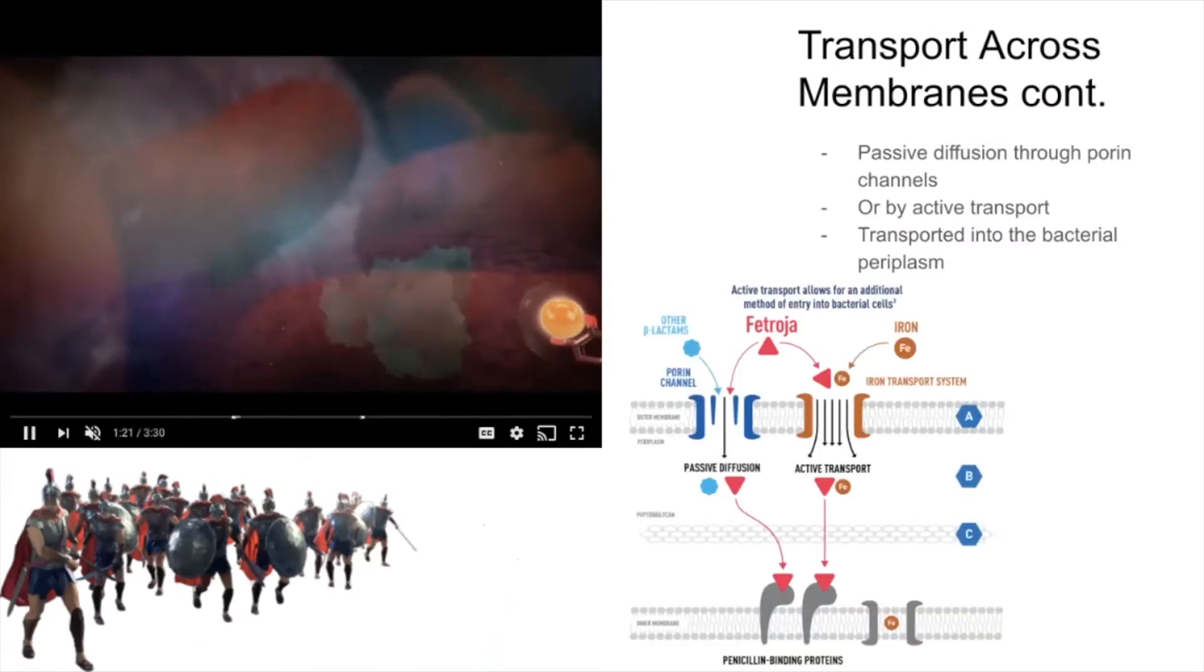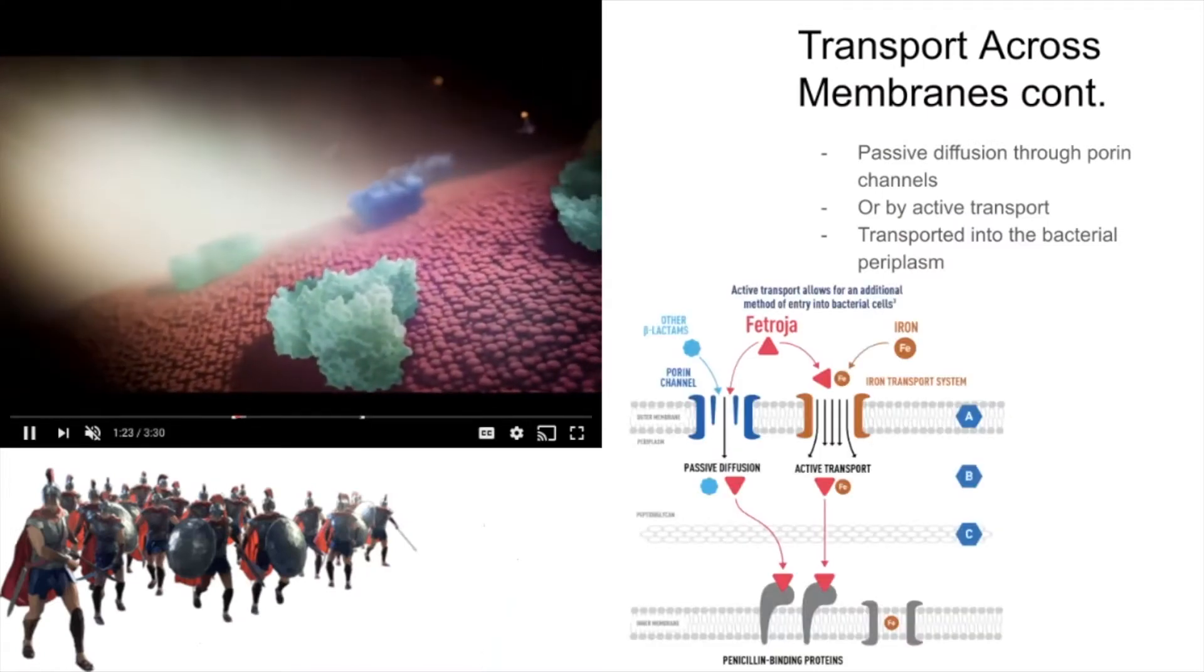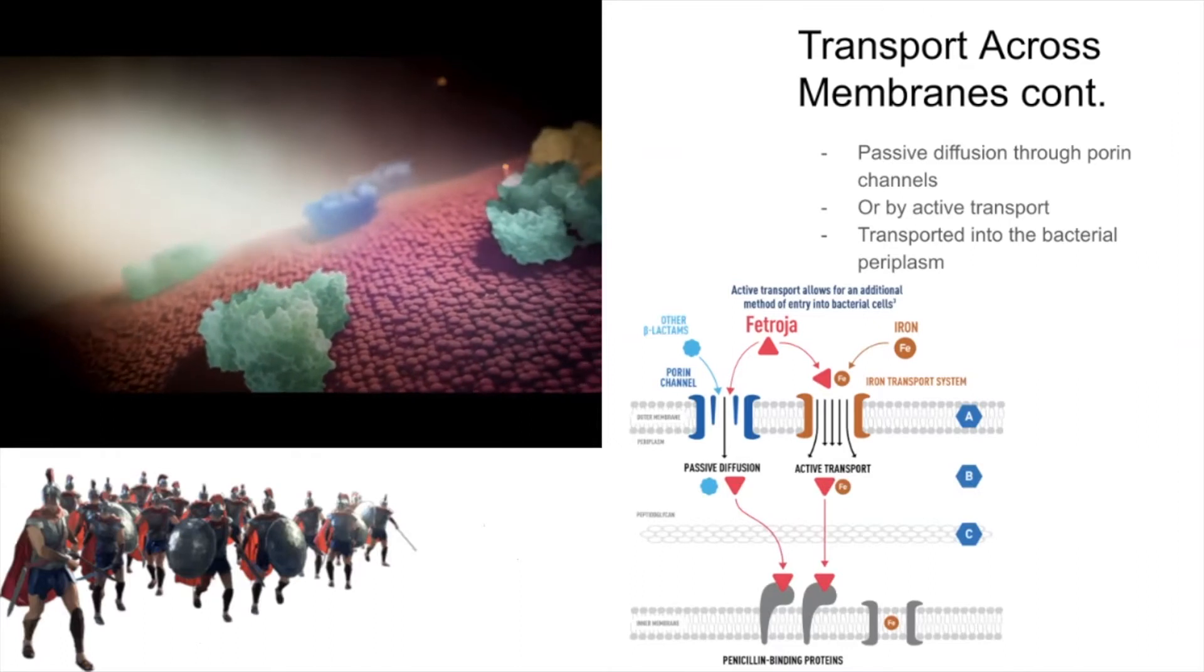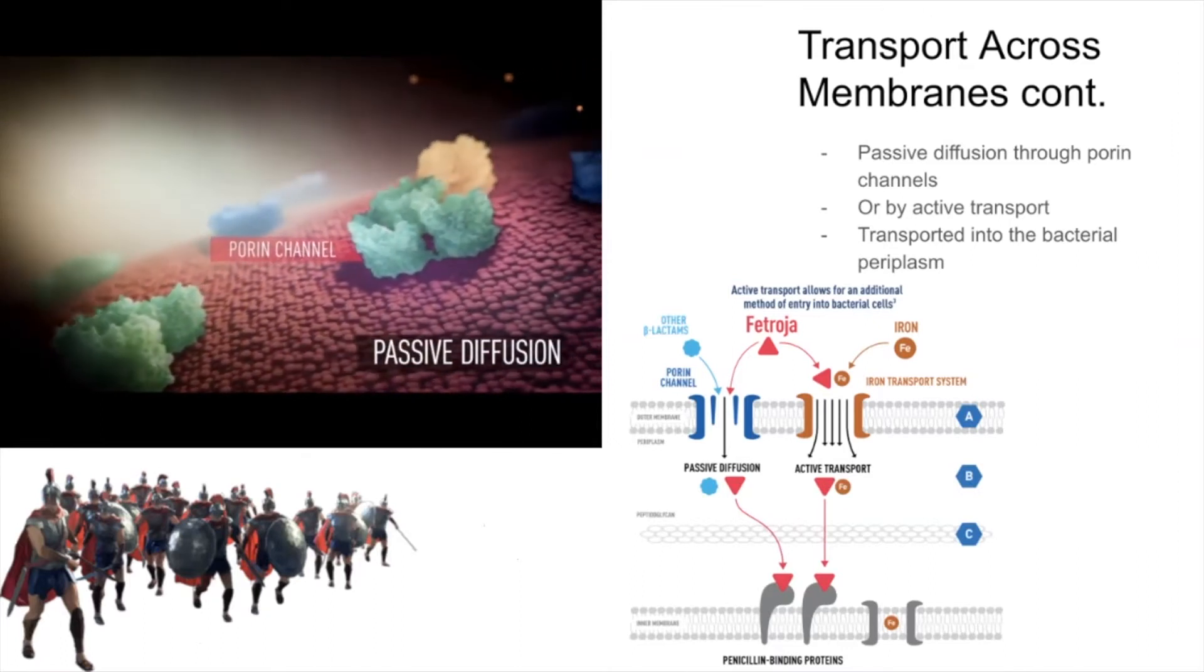Like other beta-lactam antibiotics, Fetroja can enter gram-negative pathogens by passive diffusion through porin channels.